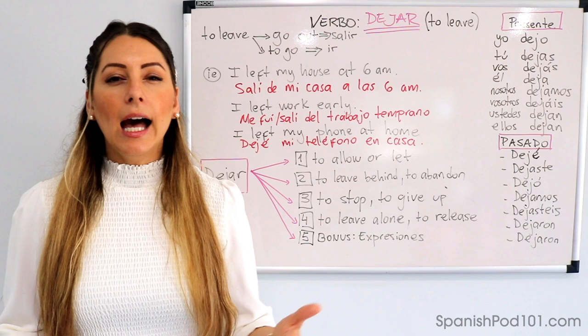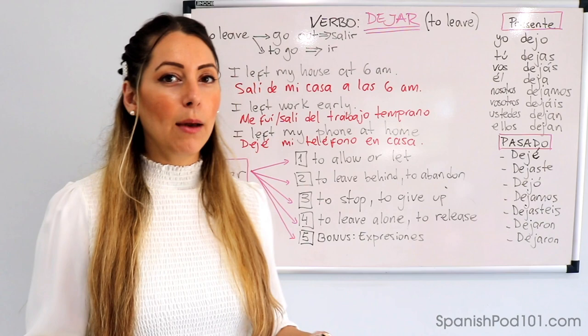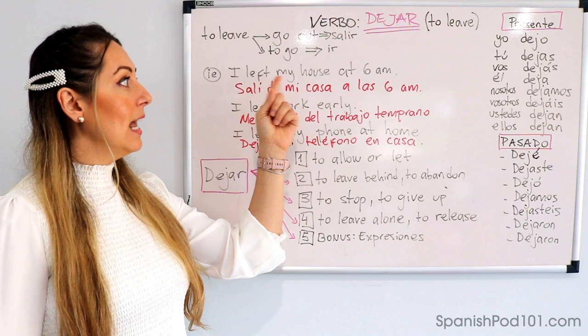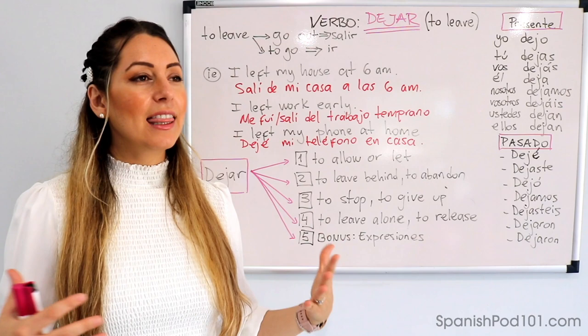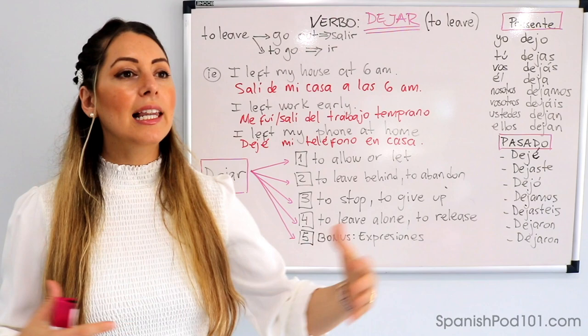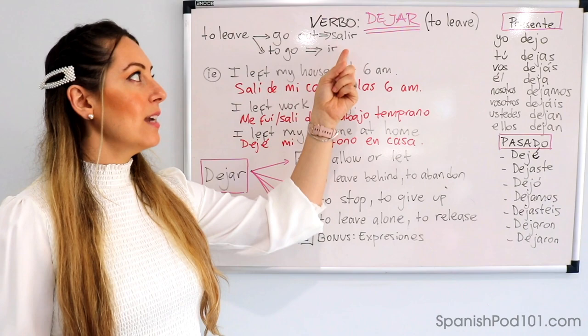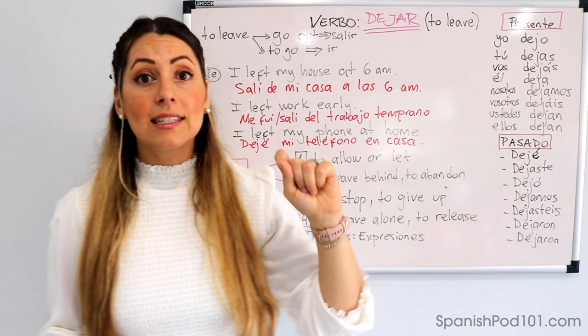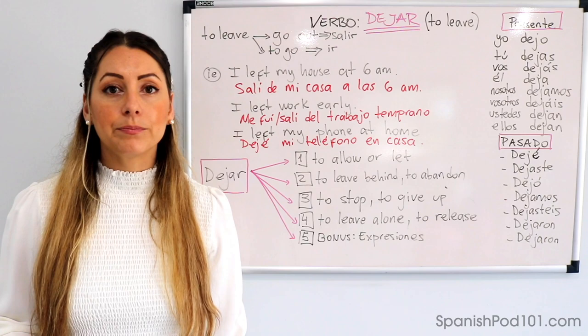Vamos a ver algunos ejemplos. Por ejemplo, si tú quieres decir 'I left my house at 6 p.m.' — con la idea de que salí, la idea de salir — in Spanish we are not going to use the verb dejar. Vamos a usar el verbo salir. Vamos a decir: Salí de mi casa a las 6 de la mañana. Salí de mi casa. When we are talking about 'to go out', in Spanish we are going to use a different verb.